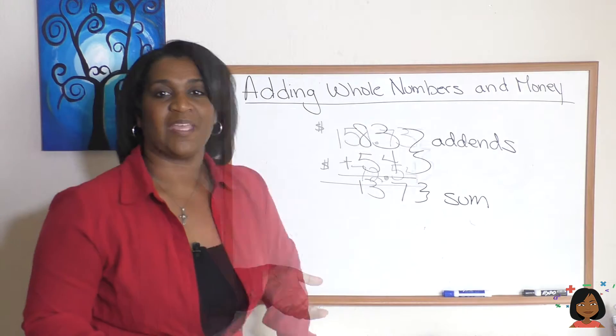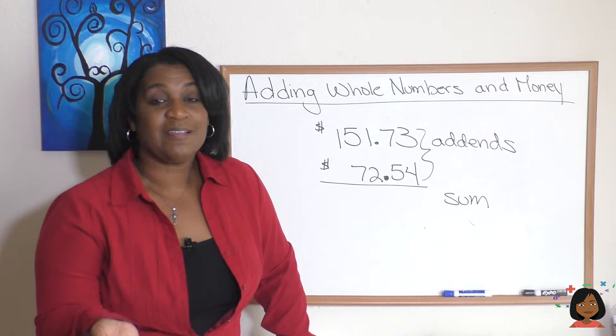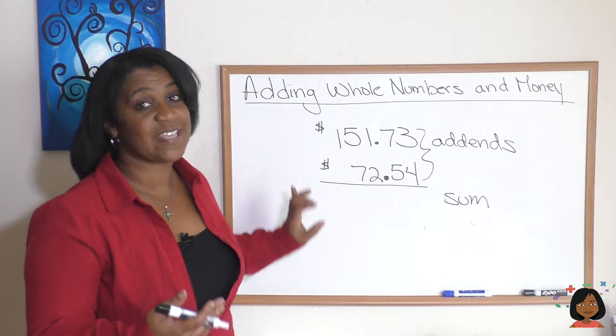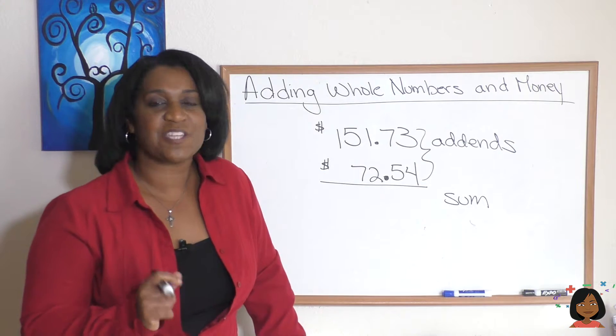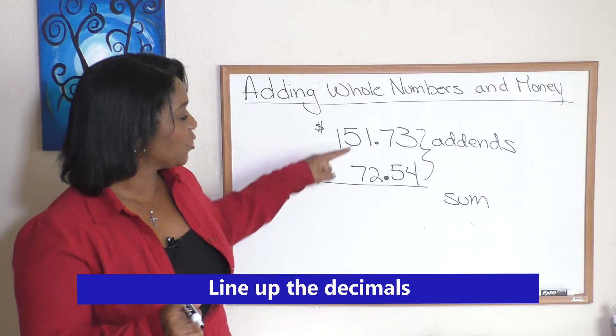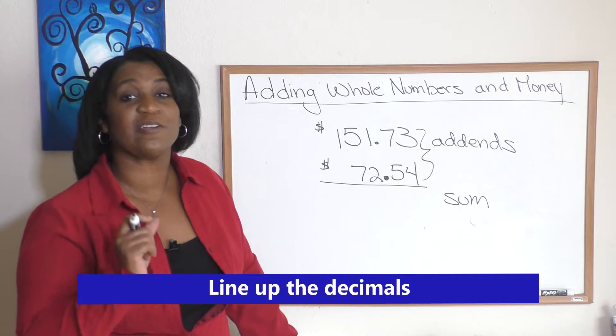Now when we're adding money, we still call these our addends and our sum, but the one thing that's different about adding money: we want to make sure that we always line up our decimal points and then we add.